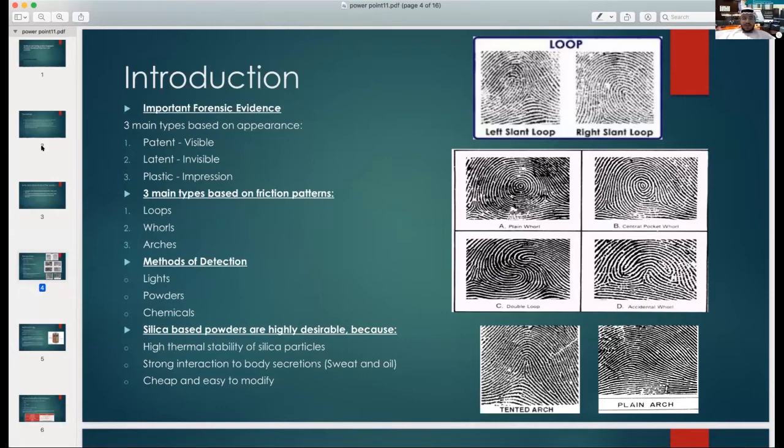We have three main types of friction ridge patterns: loops, we will have two kinds of loops, and we have whorls, we have four kinds of whorls, and we have arches, two kinds of arches. And the loops are like 65% in the population, whorls are like 35%, arches would be 5%, which is the rarest.